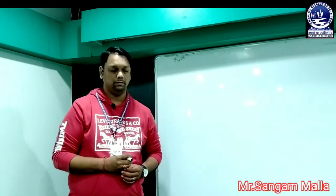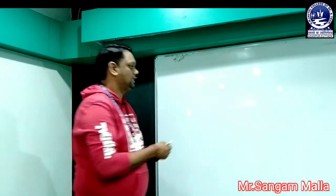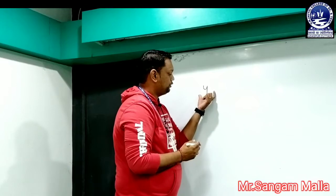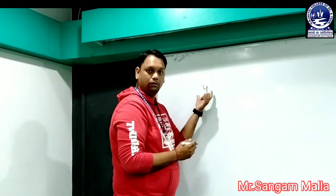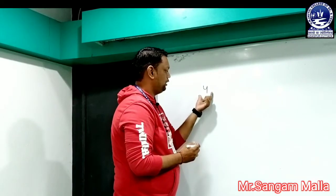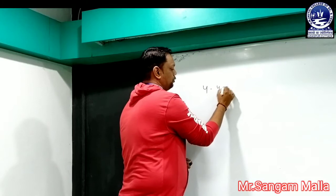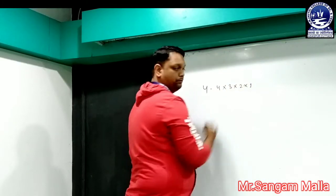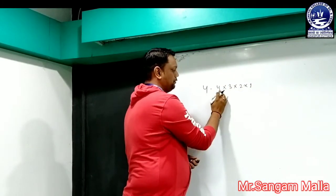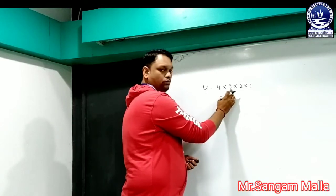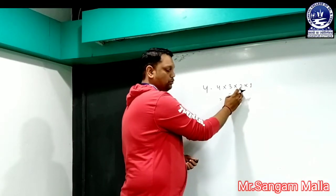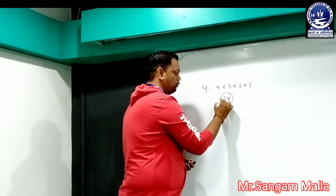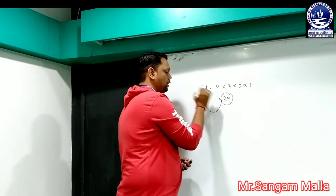What do you mean by factorial of a number? Suppose I am writing 4. What do you mean by factorial of the number 4? The factorial of 4 means 4 into 3 into 2 into 1. Whenever we calculate 4 into 3, that is 12; 12 into 2, that is 24; 24 into 1, that is 24. So 24 is the factorial of 4.